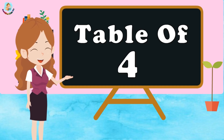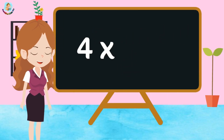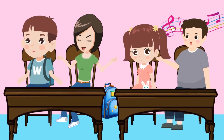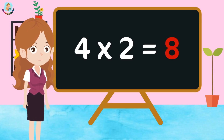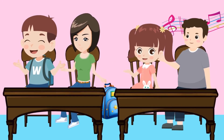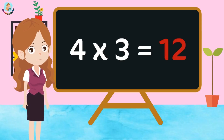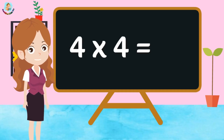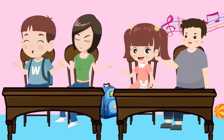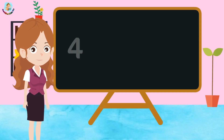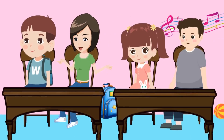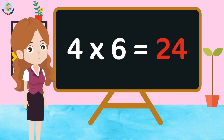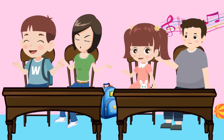Table of 4. 4 1s are 4, 4 2s are 8, 4 3s are 12, 4 4s are 16, 4 5s are 20, 4 6s are 24.